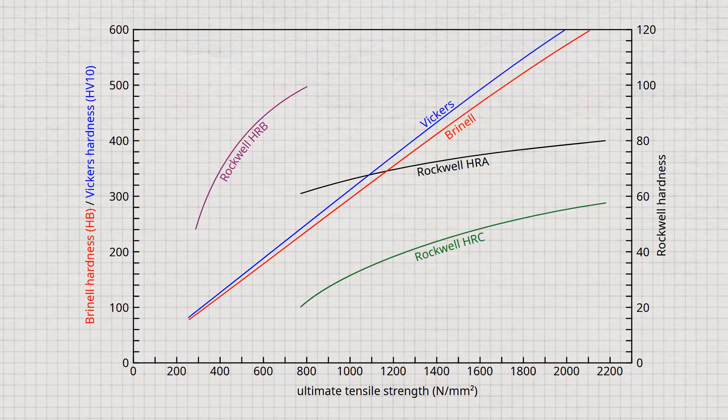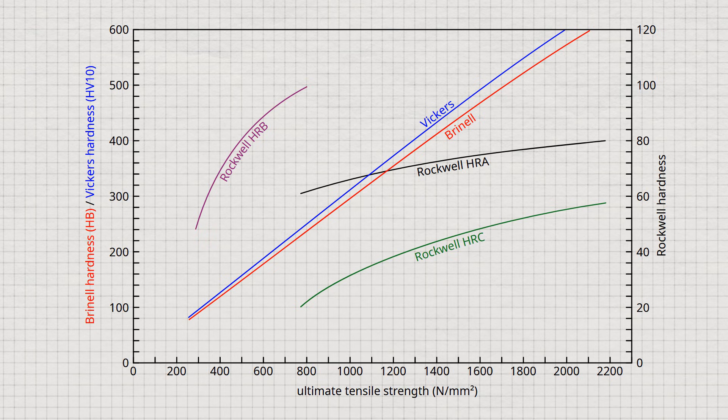The diagram shows reference values for the expected hardness of unalloyed and low alloy steels in their untreated state.